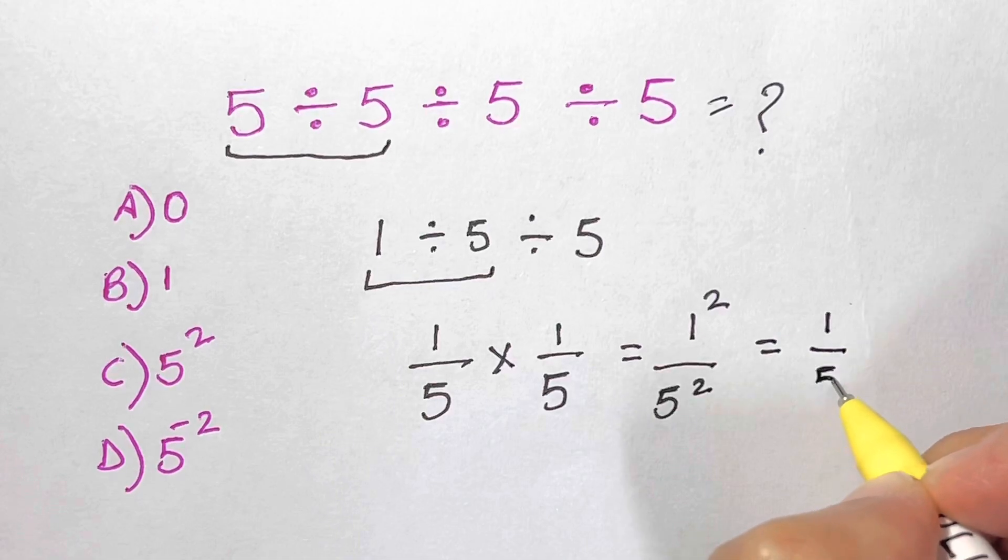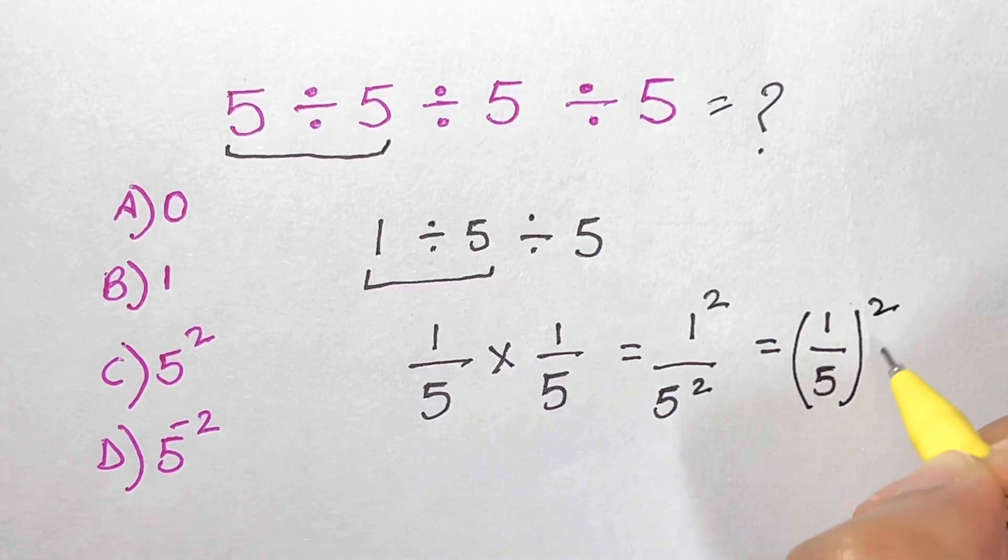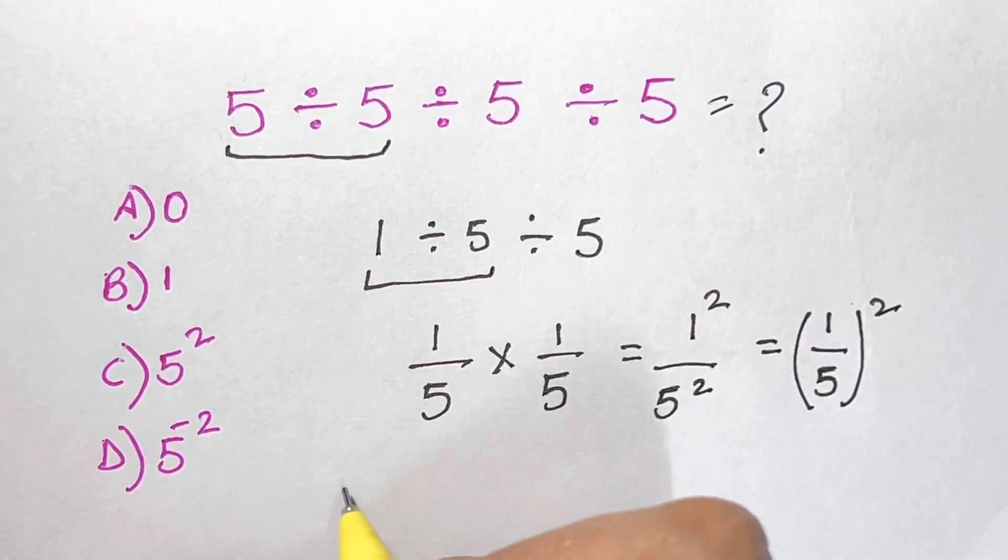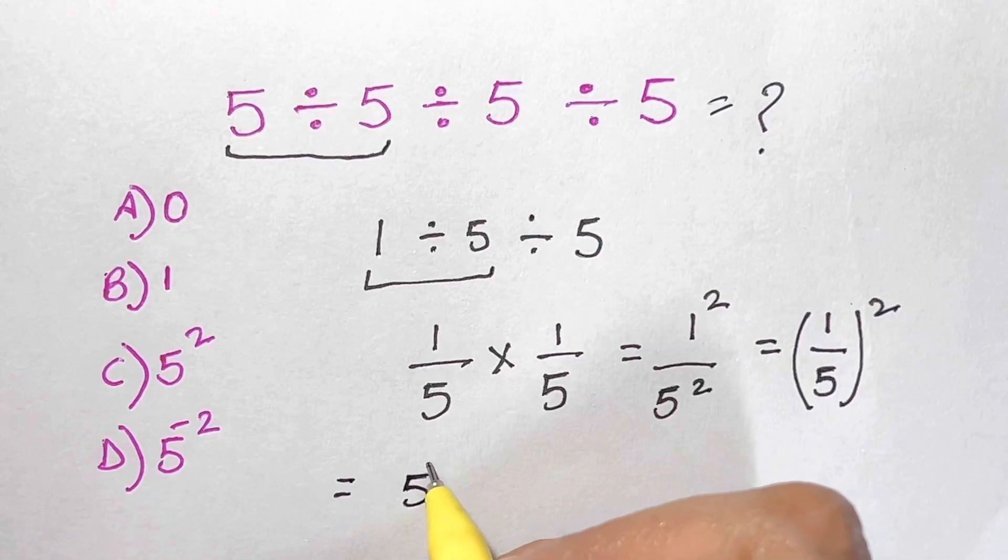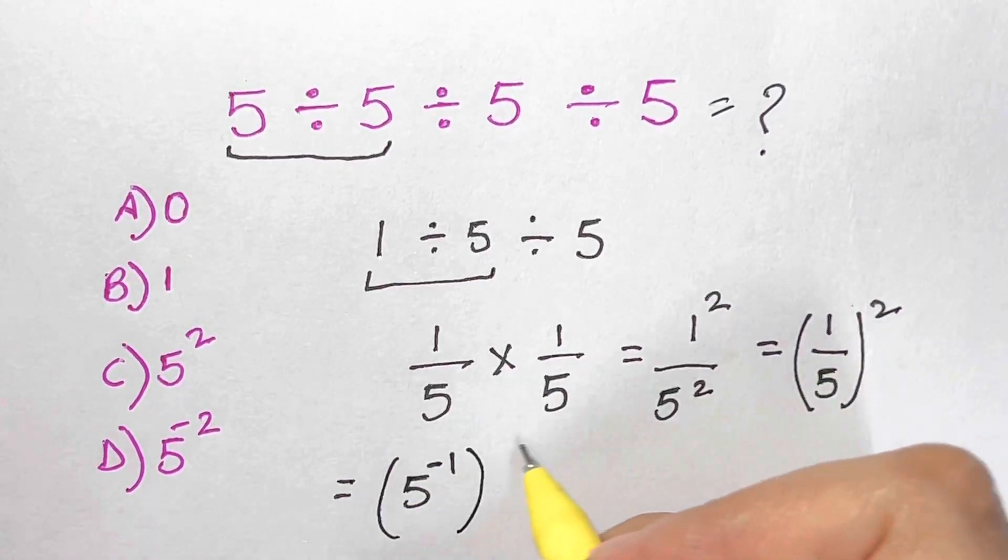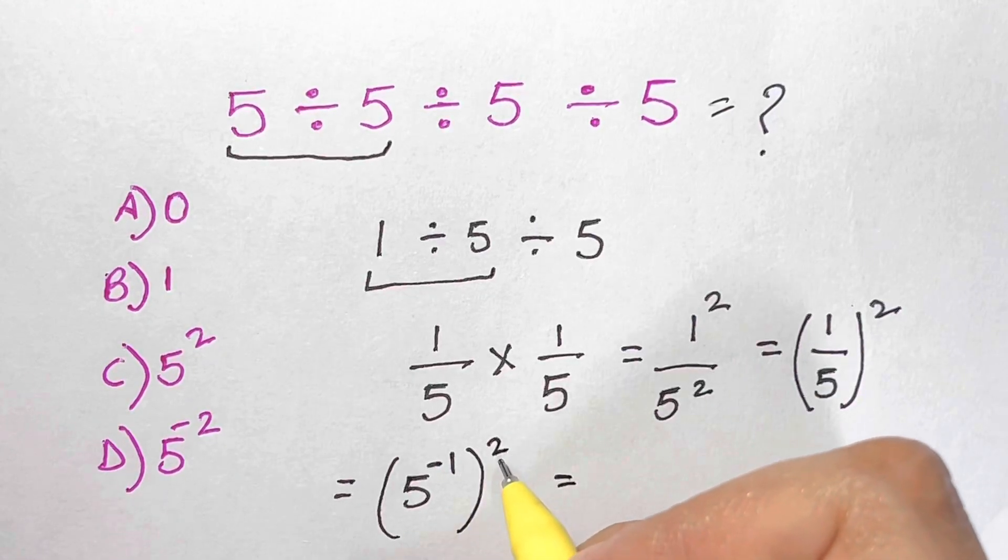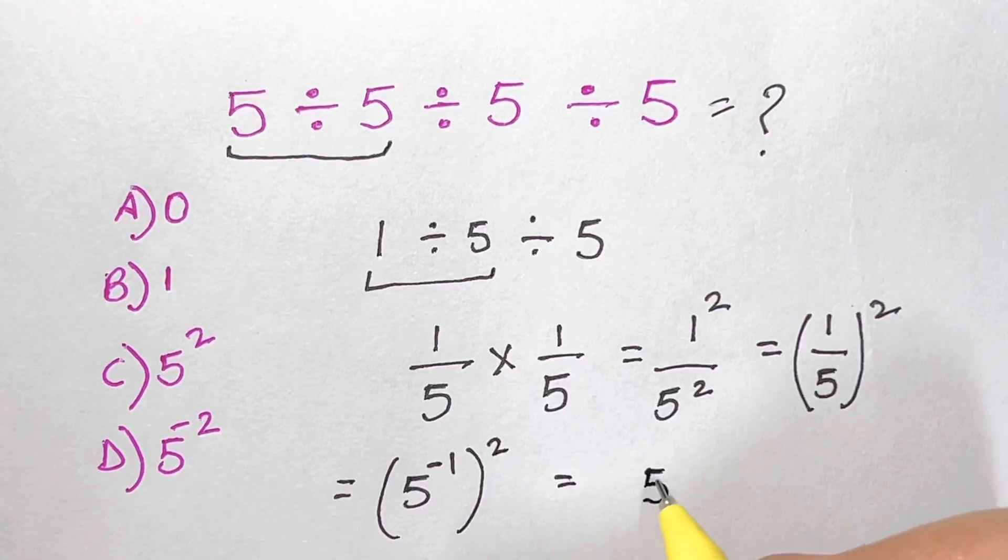Now 1 over 5 is 5 to the power of minus 1, then you have whole squared here. So whenever you have power to power, you multiply them. 5 to the power of minus 1 into 2, that's minus 2.